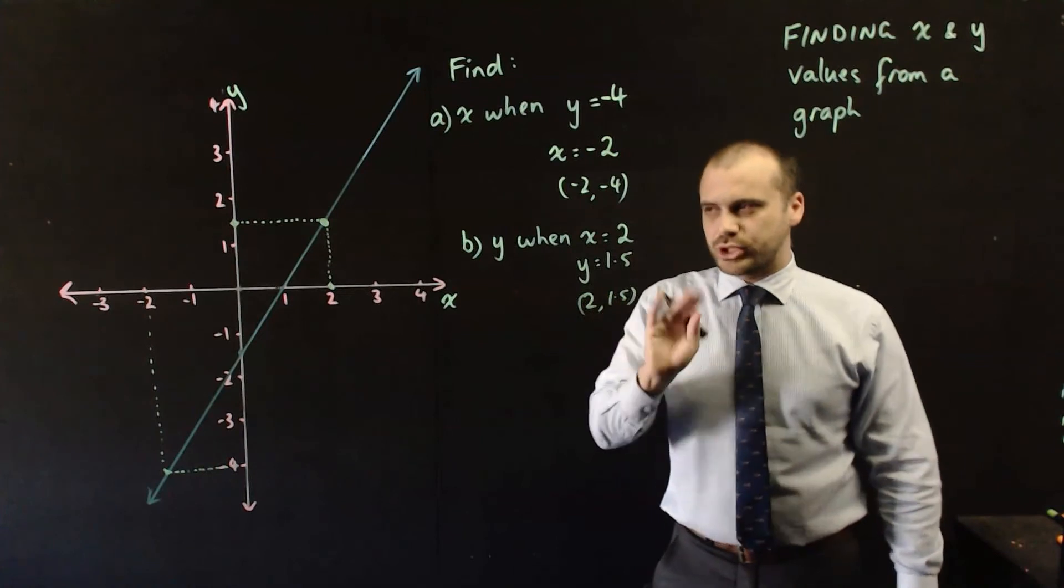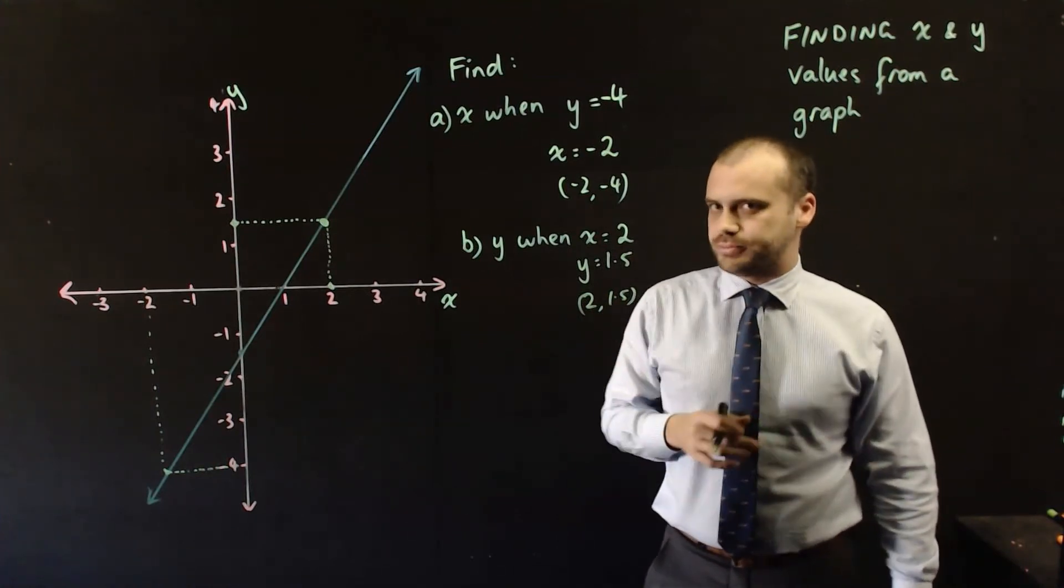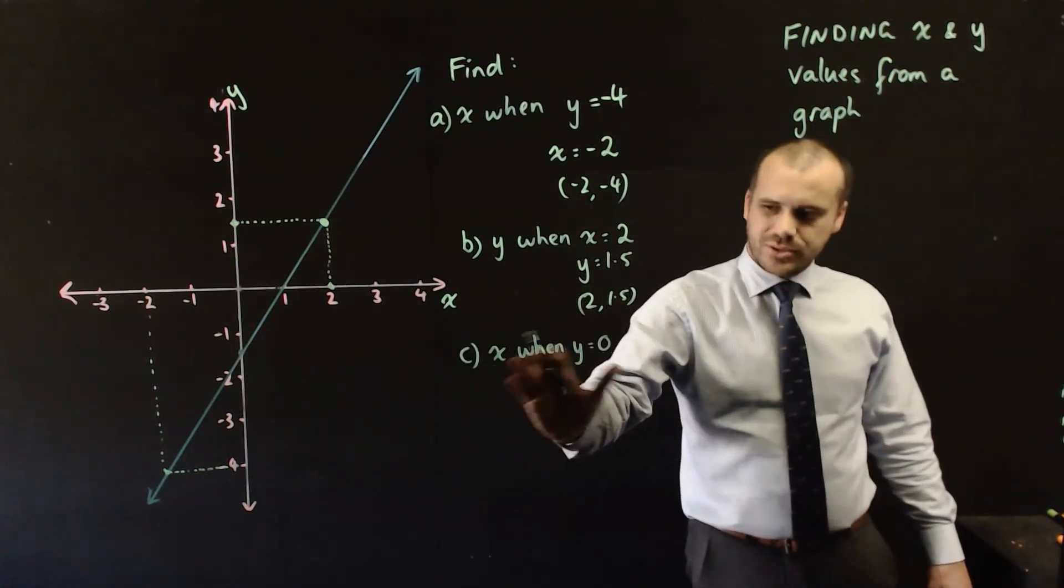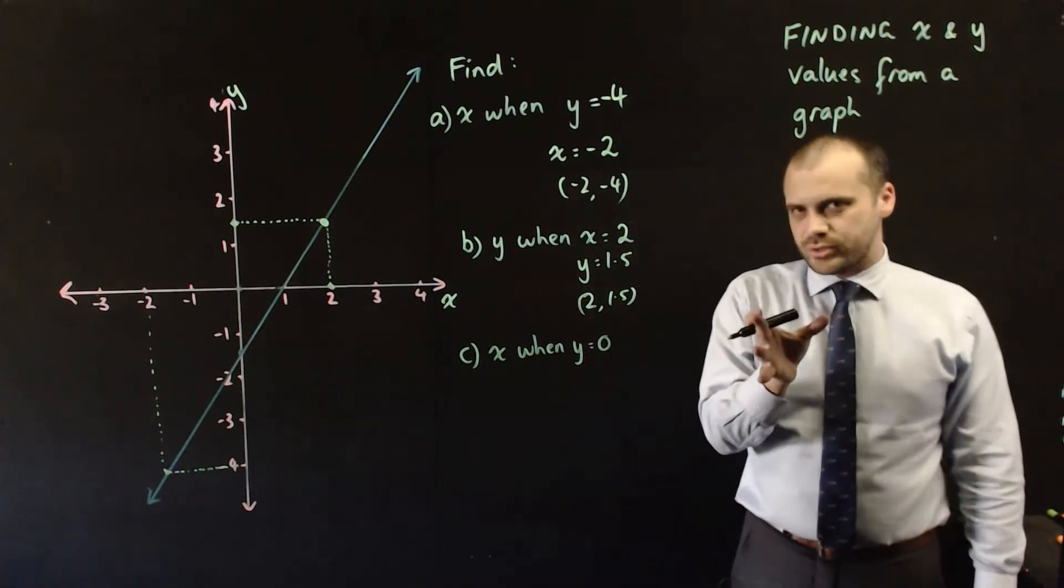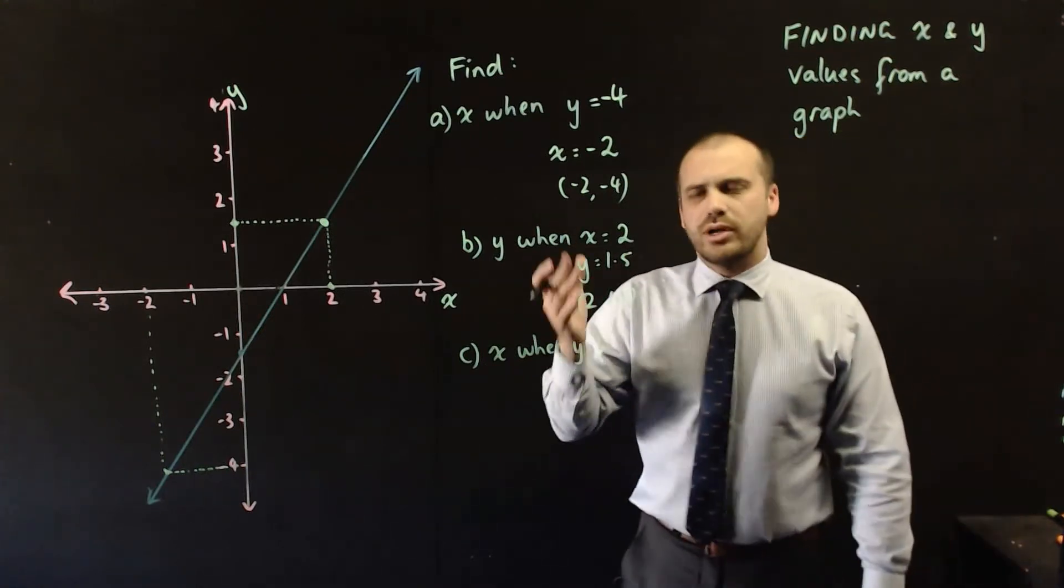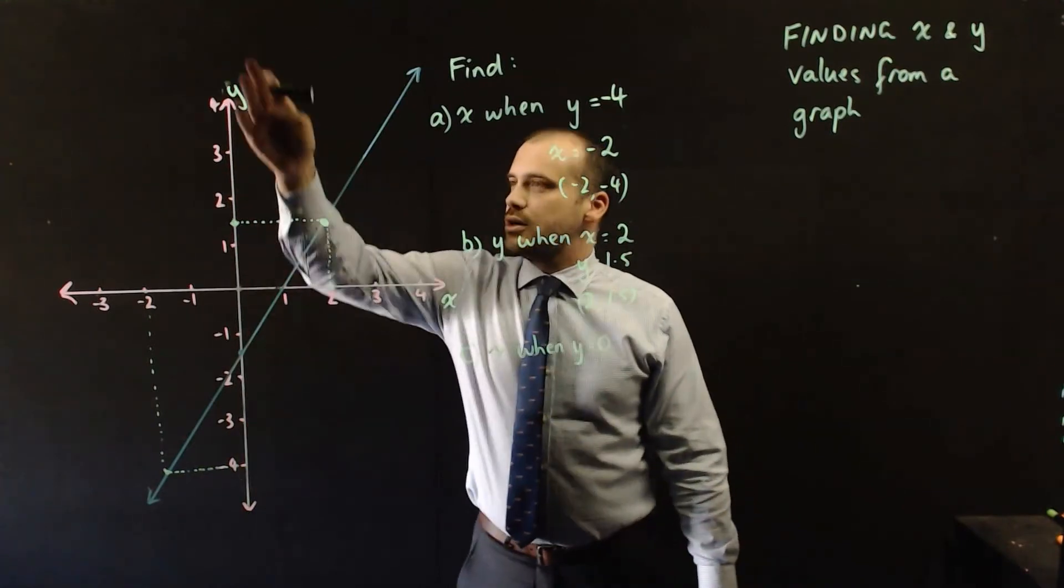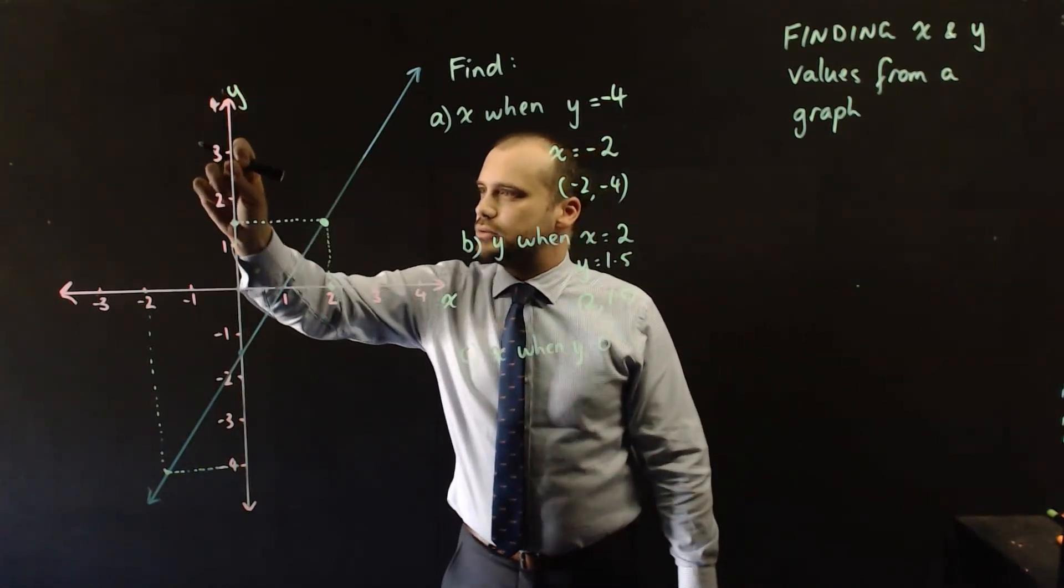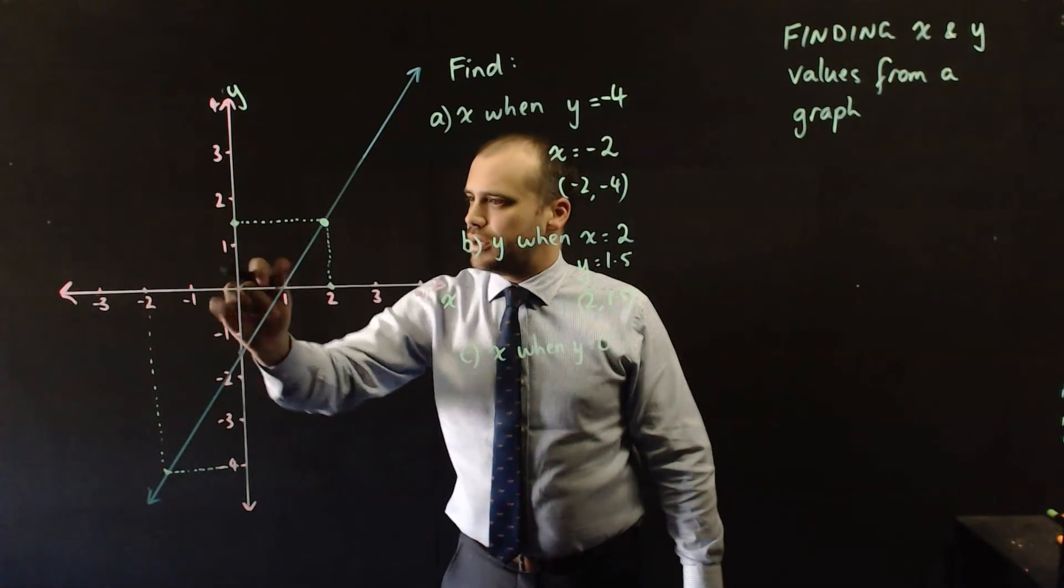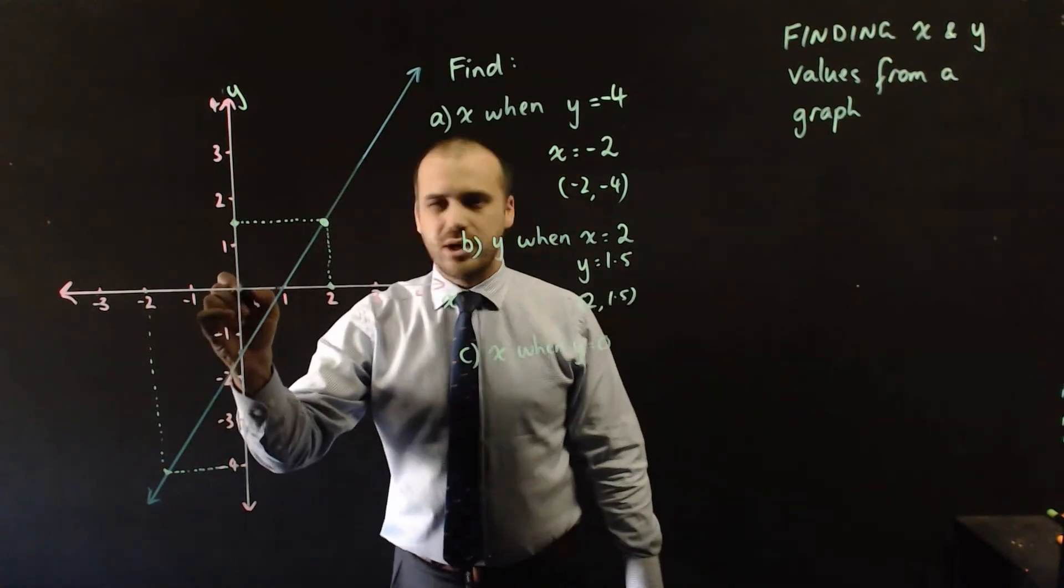Alright, there are a couple of other ones that I want to show you really quickly because they can trick people up. What about finding x when y equals 0? Now, where does y equal 0? Here's my y axis. y is equal to 0. There it is. Right there. That's where y is equal to 0.